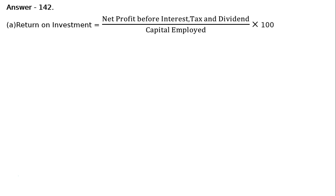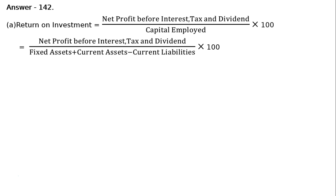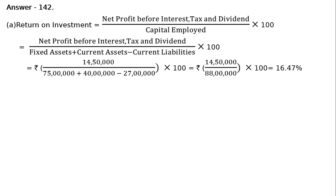Answer 142. A. Return on Investment is equal to net profit before interest, tax, and dividend upon capital employed into 100. That is equal to net profit before interest, tax, and dividend upon fixed assets plus current assets minus current liabilities into 100. That is equal to Rs. 14,50,000 divided by Rs. 75,00,000 plus Rs. 40,00,000 minus Rs. 27,00,000, whole into 100. That is equal to 14,50,000 divided by 88,00,000 into 100, which equals 16.47%.